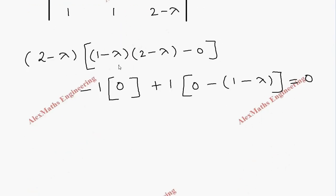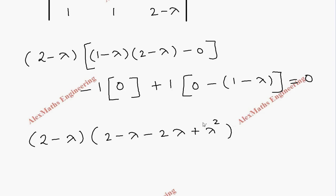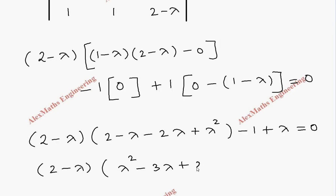Now, this is 2 minus lambda multiplied out. We expand: 2 minus lambda minus 2 lambda plus lambda squared. The second term is 0, and here minus 1 plus lambda equals 0. We are going to rearrange the terms. So 2 minus lambda as it is; this becomes lambda squared minus 3 lambda plus 2. Then minus 1 plus lambda equals 0.